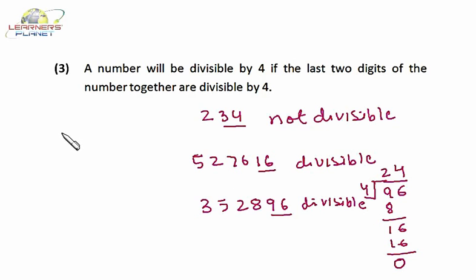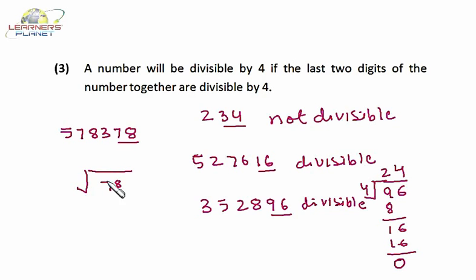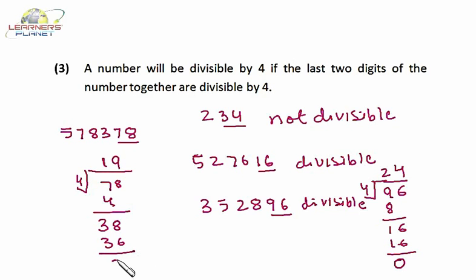Let's take one more example: suppose I have the number 578378. Just see the last two digits — it is 78. Let's check whether 78 is divisible by 4 or not. Dividing 78 by 4, we get a remainder of 2. That means 78 is not divisible by 4. The last two digits are not divisible by 4, hence the entire number will not be divisible by 4. I hope you are clear about the divisibility test of 4. Now let's take the next divisibility test.